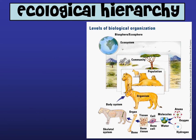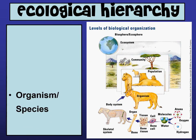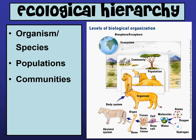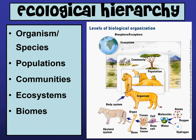There is a hierarchical system that exists in ecology. Starting from the smallest living organism, that would obviously be an organism or species. You put those together, you get populations and then communities, ecosystems, biomes, and of course the biosphere, which is the Earth. So let's go ahead and go through some of these.